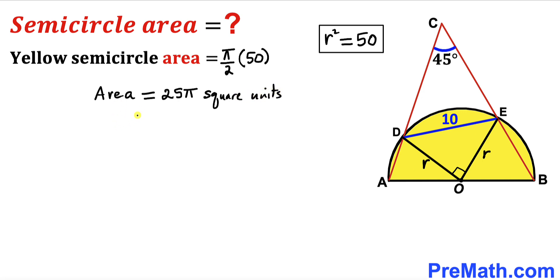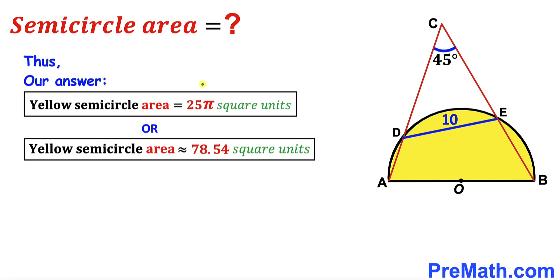In decimal form, the area is approximately 78.54 square units. So after all calculations, the area of this yellow shaded semicircle is 25π square units, approximately equal to 78.54 square units. That's our final answer. Thanks for watching, and please don't forget to subscribe to my channel for more exciting videos.